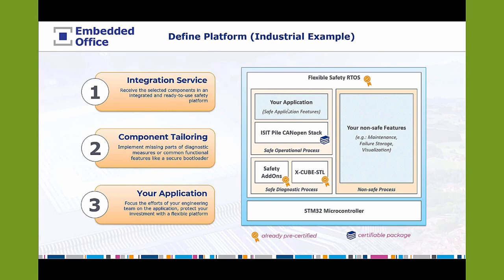After defining the safety platform, three activities are required: integration of four components from three vendors into a single software environment. Embedded Office offers an integration service for precisely this purpose — you will receive an integrated and ready-to-use safety platform. If you want additional safety measures or features like a secure bootloader, Embedded Office can assist with component tailoring. Most importantly, your engineering team's focus should concentrate on the application. Using a flexible safety platform can protect your investment across multiple generations of products. Now let us dive into the CAN Open stack with ESIT.